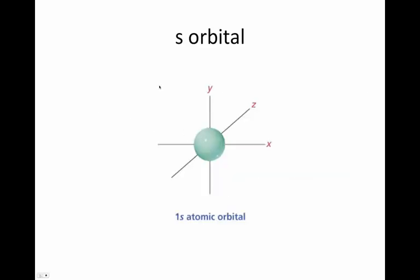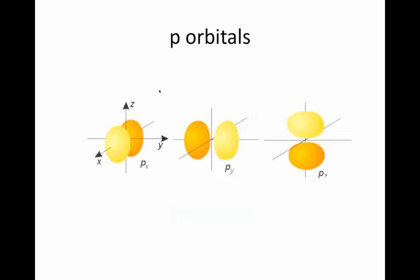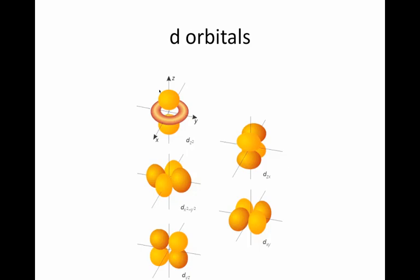In the n equals 1 level, an s orbital, this is a picture of a 1s orbital, looks basically like a sphere of electron density and we define that there's a 90% probability that the electron can be found within this sphere. P orbitals have two lobes of electron density and are aligned along a set of perpendicular x, y, z axes. And d orbitals have five different shapes and directions of orbitals.